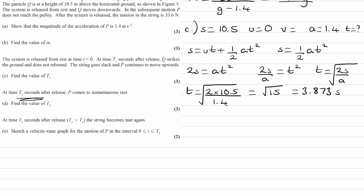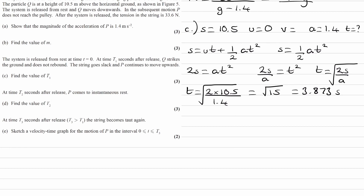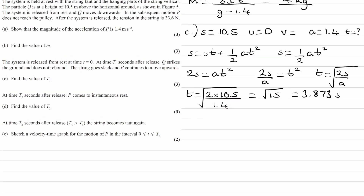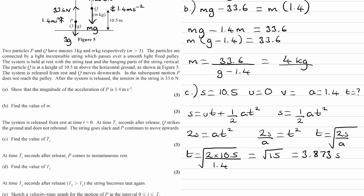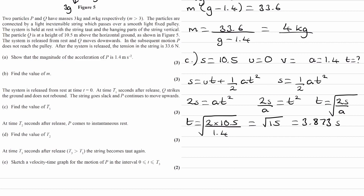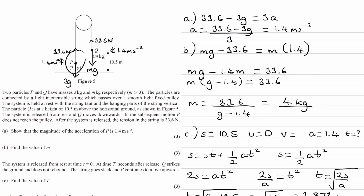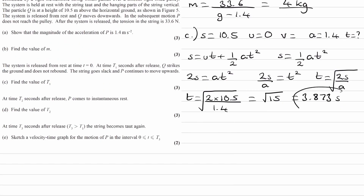On to part D. At time T2 seconds after release, P comes to instantaneous rest — find the value of T2. The time T2 is measured after release. So we release the objects, Q goes down and hits the floor — that takes 3.873 seconds. Then P will continue to move upwards because it still has some velocity. It will eventually stop, and that extra time we're going to work out next. We want to add that to the 3.873 to get the overall time from release to when P comes to rest.